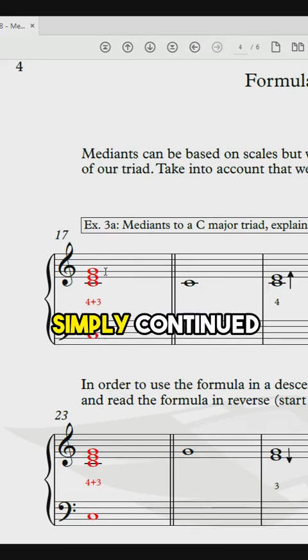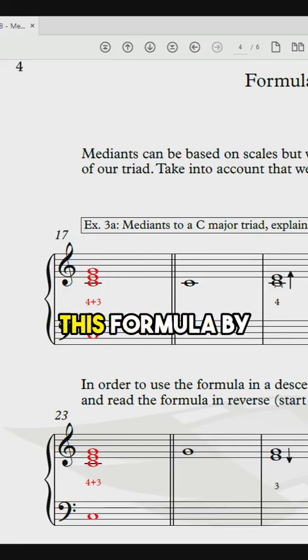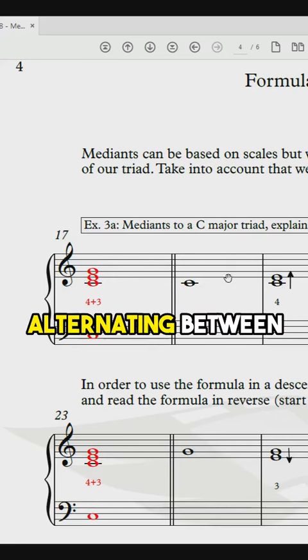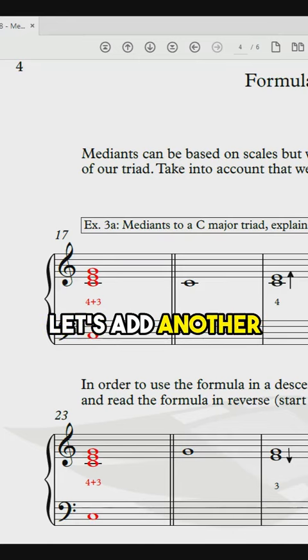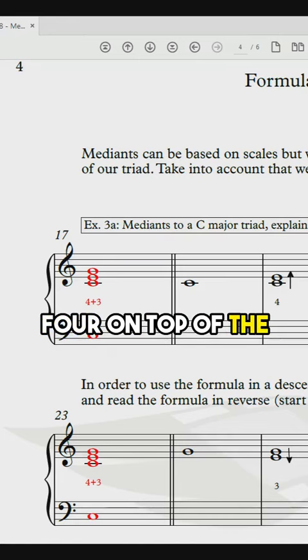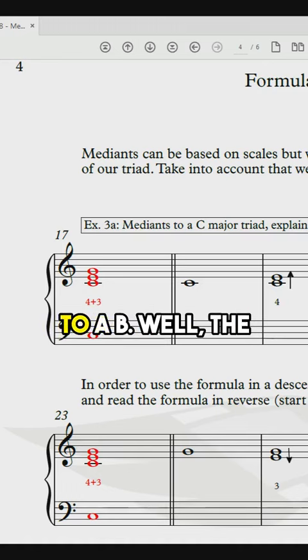So what happens if we simply continued this formula by alternating between the two numbers? We stopped at 3, which means let's add another 4 on top of the G, which brings us to a B.